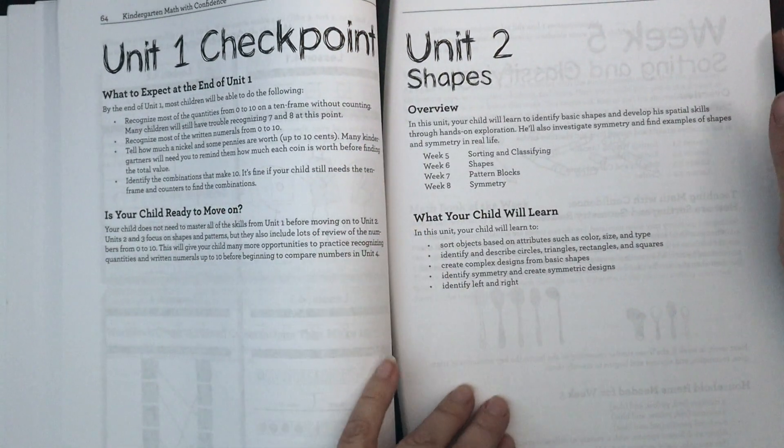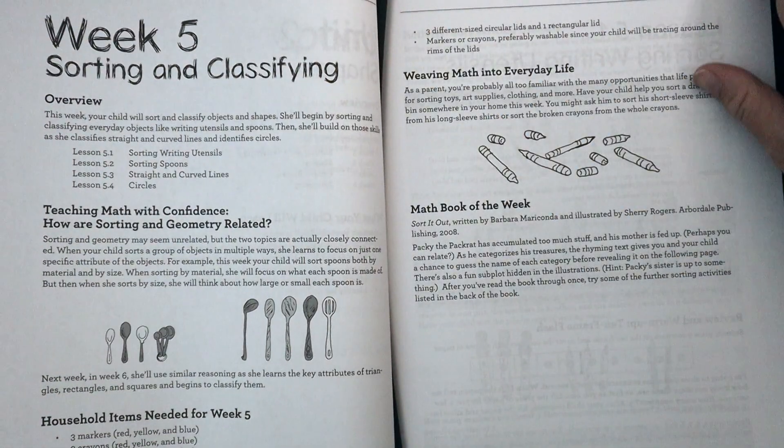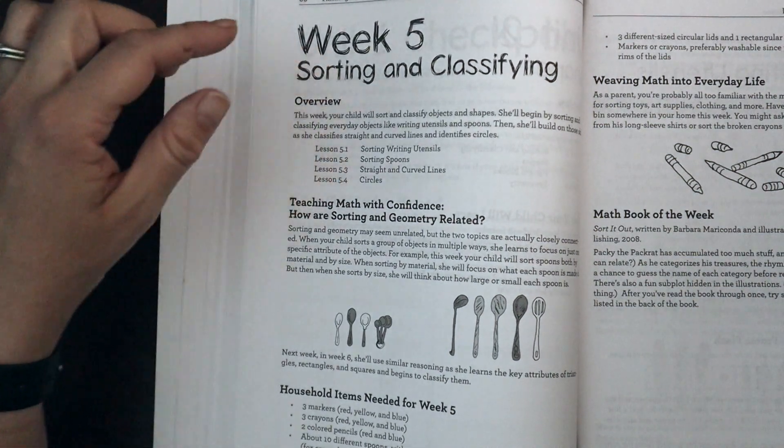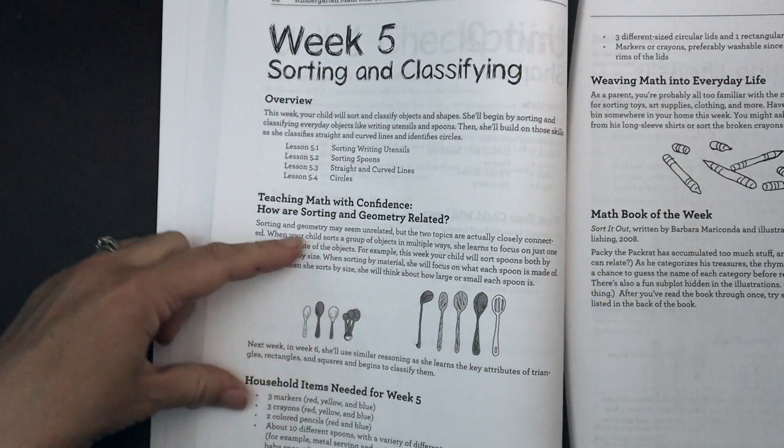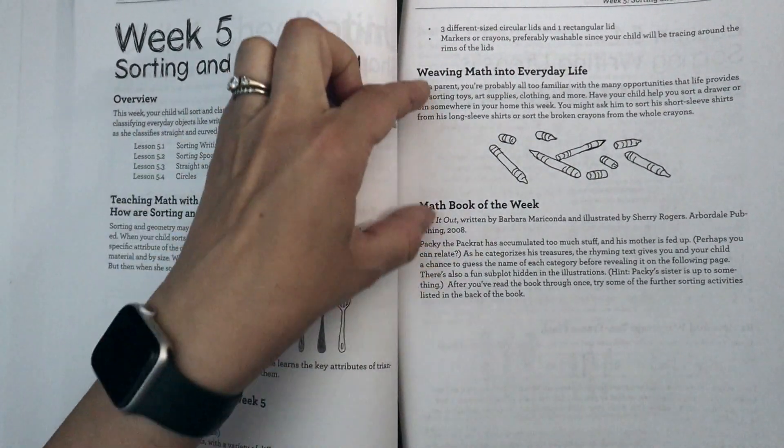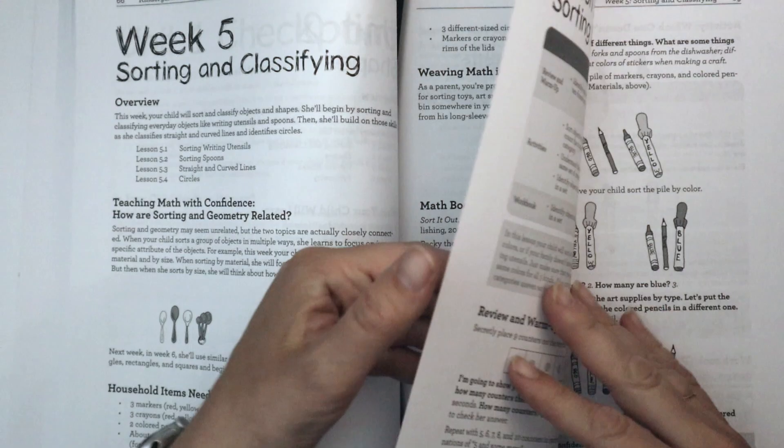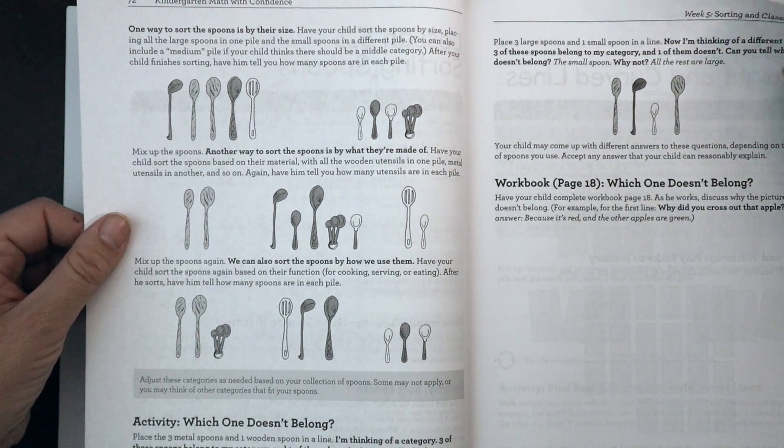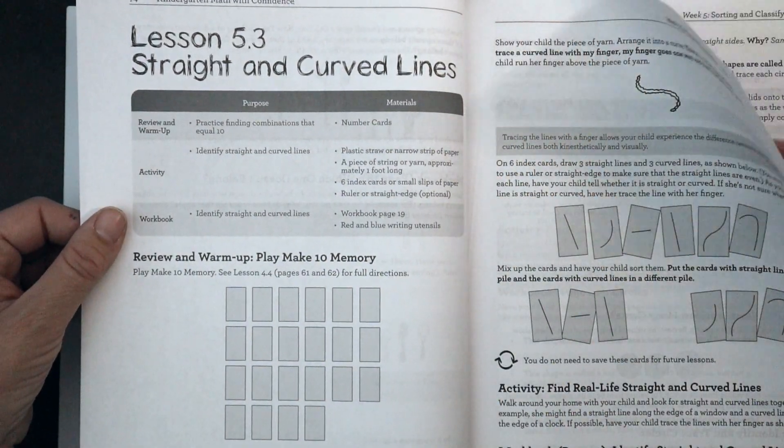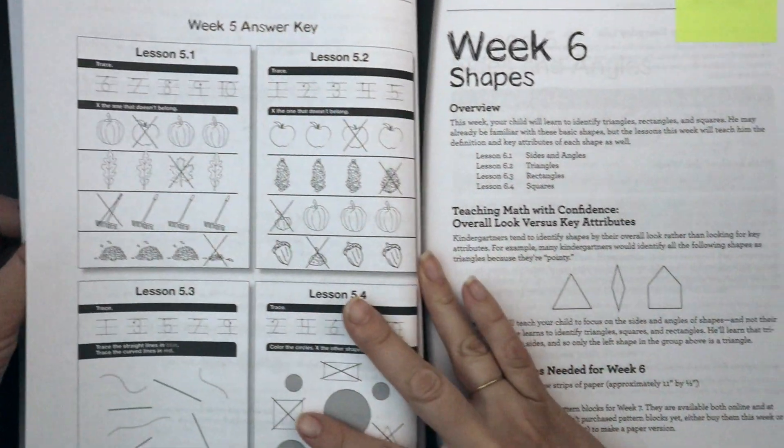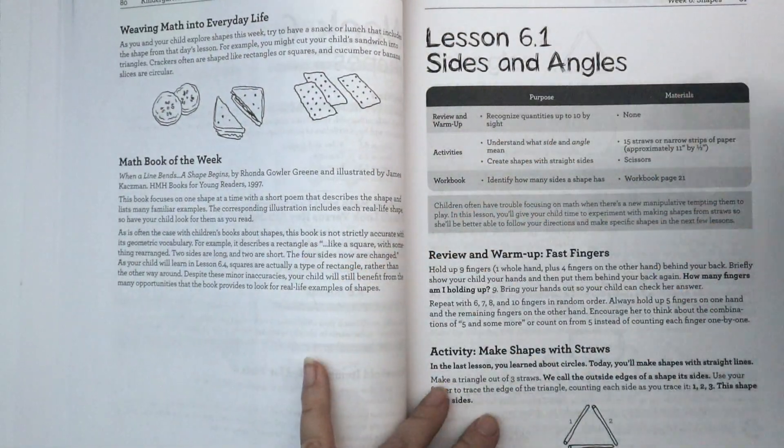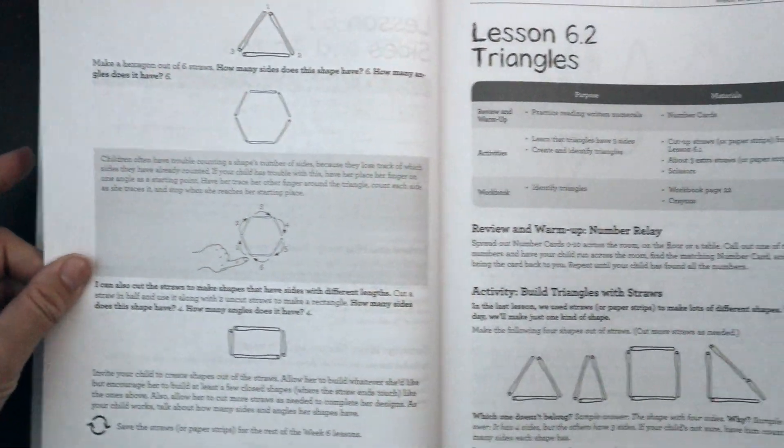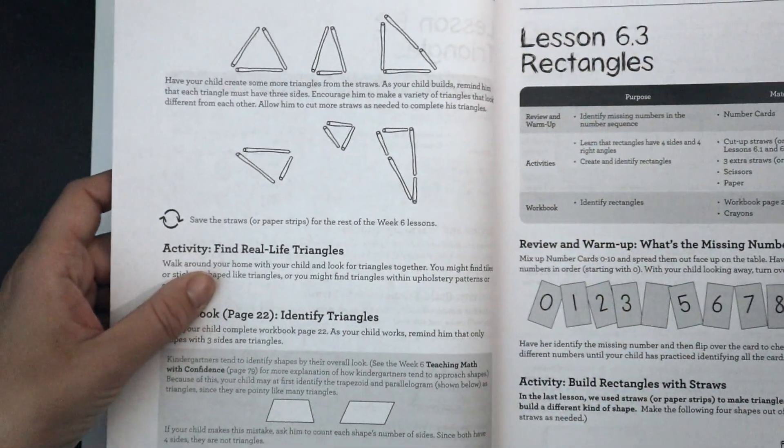All right. So here we are in unit two on shapes. Again, we have our overview, what your child will learn. We have the information about the specific week. So sorting and classifying, how are math sorting and geometry related, the household items you're going to need, weaving it into everyday life and your book. And again, a lot of these lessons are using household materials like spoons or whatever it is you may have. Beginning to talk about sides and angles. We have making triangles and different shapes out of straws and different household materials.